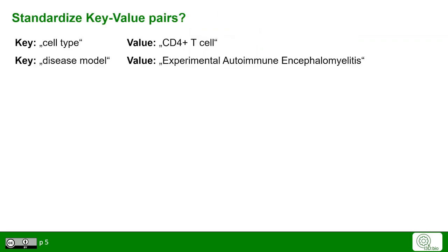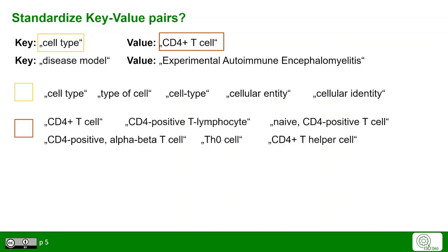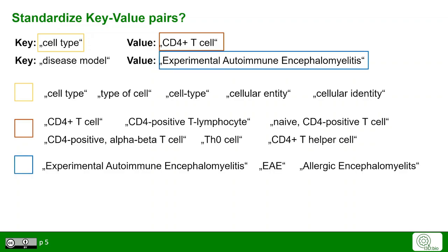There remains one problem. If we look at individual keys or values, there could be different ways of spelling or different wordings used for annotation. For example, instead of 'cell type' we could write 'type of cell', 'cell-type' with a hyphen, 'cellular entity', or 'cellular identity'. For CD4-positive T-cell, we could write CD4-plus T-cell or CD4-positive T-lymphocyte. The same is true for experimental autoimmune encephalomyelitis, abbreviated EAE, or sometimes called allergic encephalomyelitis.